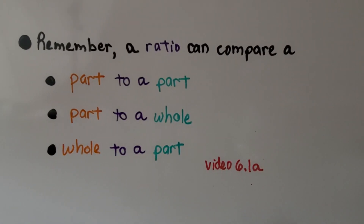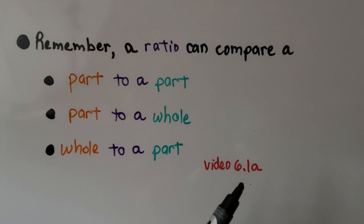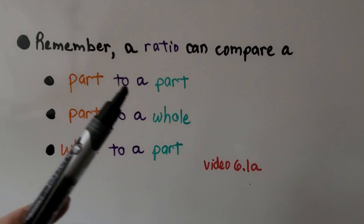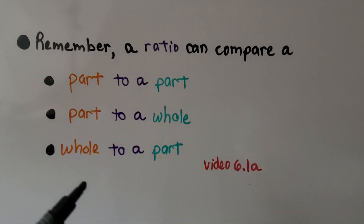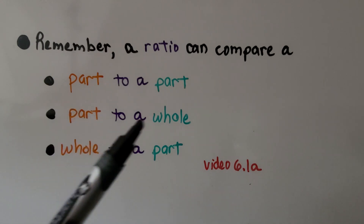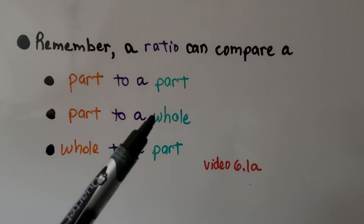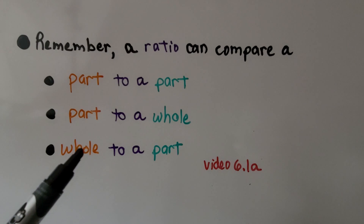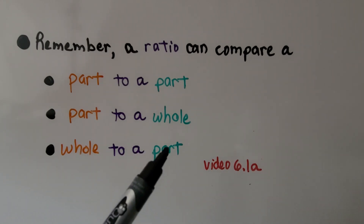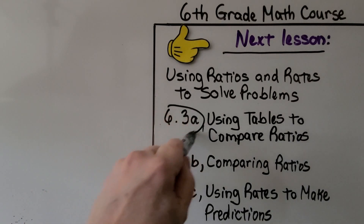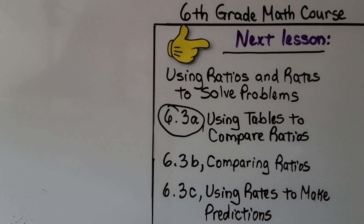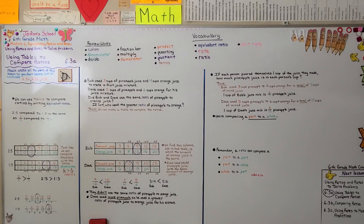As we learned in lesson 6.1a — linked in the description — a ratio can compare a part to a part, like pineapple to orange; a part to a whole, like pineapple to all of the juice; or a whole to a part, like all of the juice compared to orange juice. We've finished this lesson and will move on to the second part: comparing ratios using multiplication and division instead of tables. Have a great day!